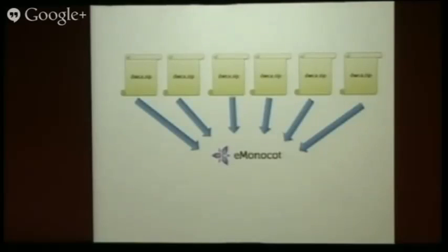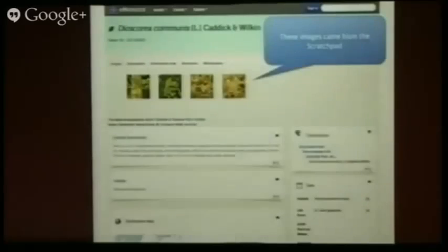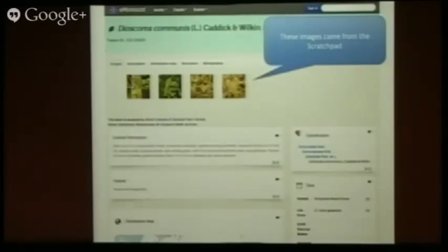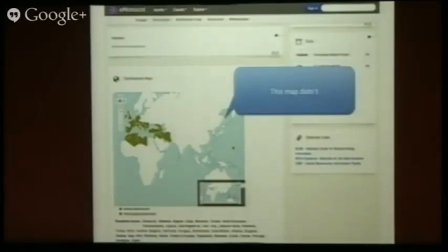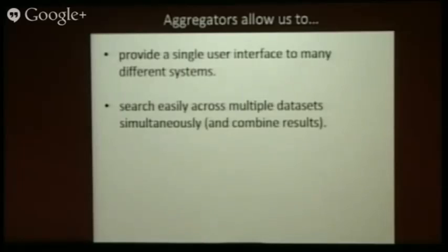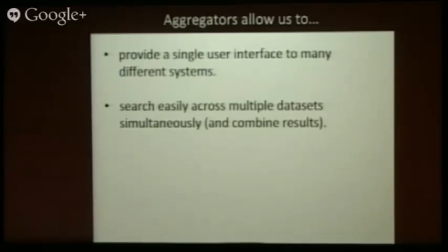The benefits of doing this — because it's quite a lot of work, as we discovered — in the case of eMonocot portal, we can harvest stuff from all of the Scratchpads which are part of the eMonocot project, and various other projects at Kew. EOL can do the same thing, and hopefully one day UBIF will make that link. The eMonocot portal shows the same taxa as before, with images from Scratchpad, descriptions, and maps from somewhere else. These aggregators — the eMonocot portal and Encyclopedia of Life — provide a single user interface to potentially many different systems, so you have one place to search and get results back in one result set, searching across multiple databases.